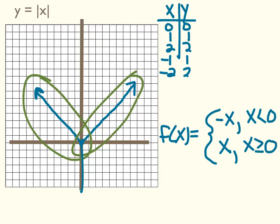I put an equal to on this because one of these has to have an equal. If they were both not equal, there would be an open circle in the middle. And if they were both equal, they would overlap and it wouldn't be a function. So it doesn't matter which one you pick, you just have to pick one or the other. That's called a compound function. However, we don't have to write it like a compound function, because we can write it as y equals the absolute value of x.